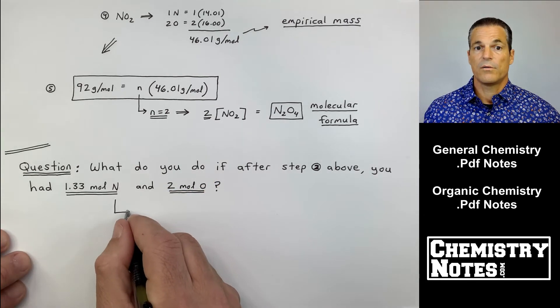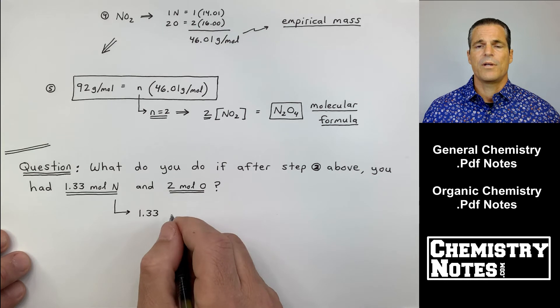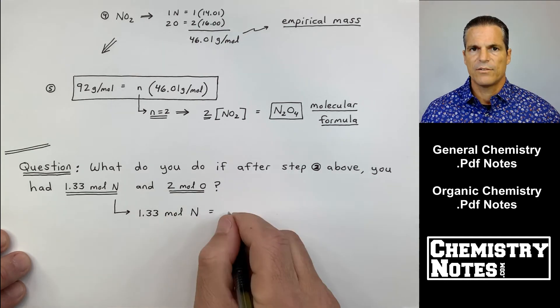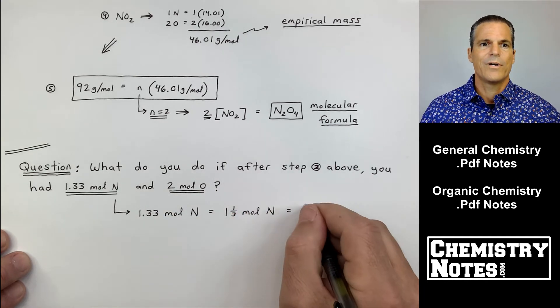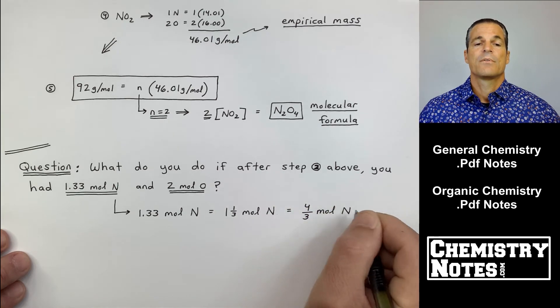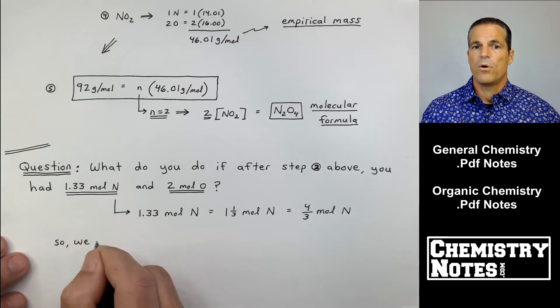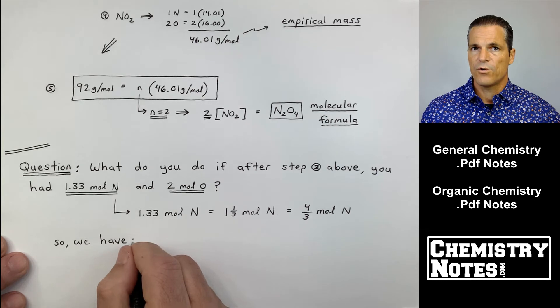The two is all right, but the 1.33, there's no way you can round that down to one. It's not like it's 1.01 or 0.99 or something. 1.33 moles is equal to one and one-third moles,